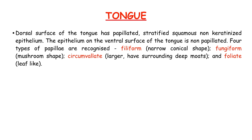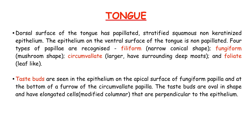The tongue: the dorsal surface of the tongue has papillated stratified squamous non-keratinized epithelium. The epithelium on the ventral surface of the tongue is non-papillated. Four types of papilla are recognized: filiform (narrow conical shape), fungiform (mushroom shape), circumvallate (larger, with surrounding deep moats), and foliate (leaf-like).